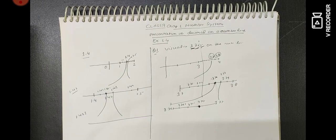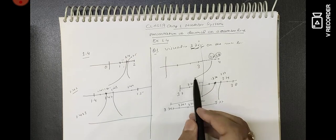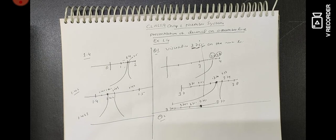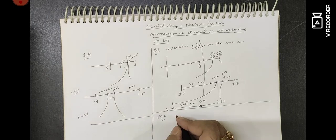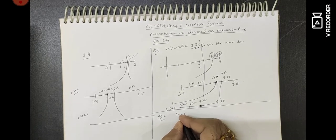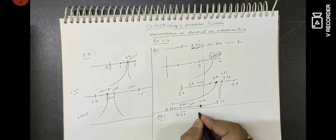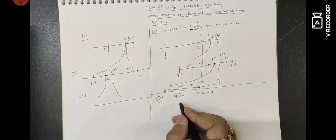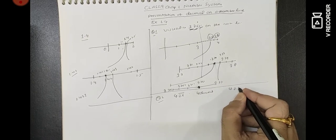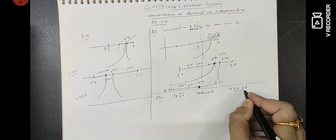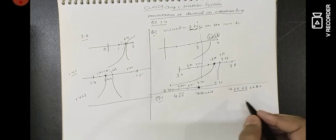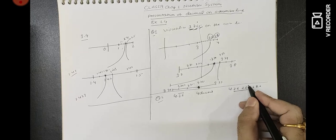Do you understand? It may take 2 or 3 times to grasp. Now Question Number 2: we have to visualize 4.26̄ on the number line. Here, if there is a bar on some digits, it is 4.2626 — it will be repeated. It is said that we show it until 4 decimal places. This means it is non-terminating and repetitive, but we take it to 4 decimal places.